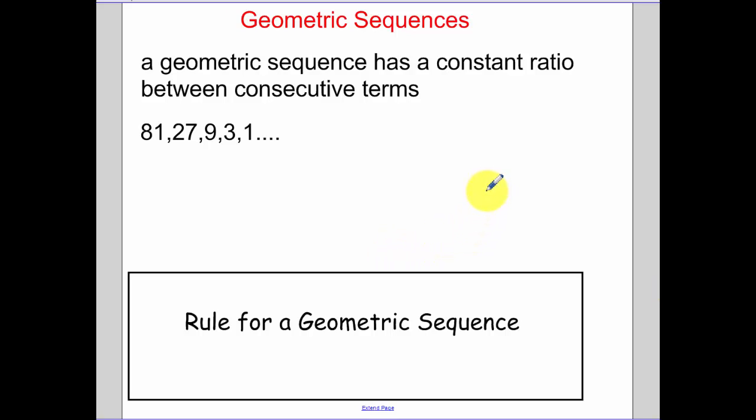Today we're going to be talking about geometric sequences. A geometric sequence has a constant ratio, as opposed to a common difference, between consecutive terms. So it's some ratio, it's some multiplier.